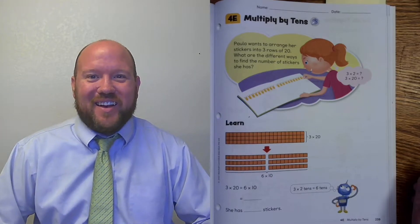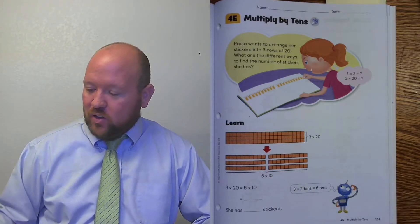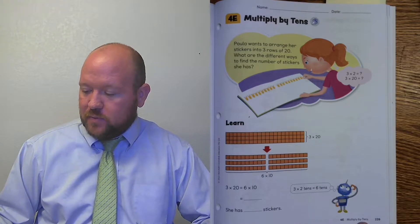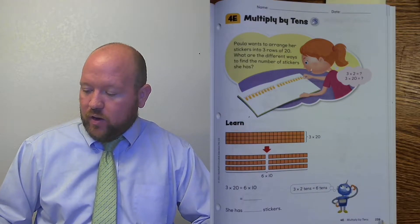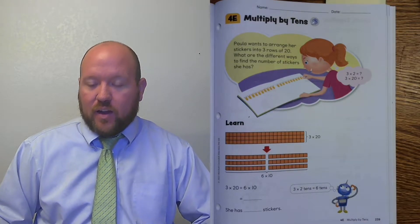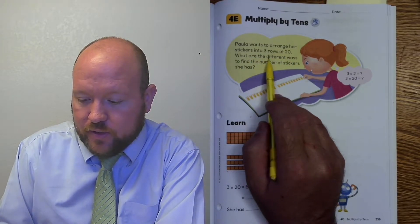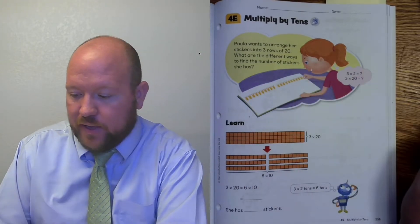Greetings and welcome to today's lesson. In today's lesson we are looking at multiplying by tens and we are on page 239. Let's begin by looking at our story problem. Paula wants to arrange her stickers into three rows of 20. What are the different ways to find the number of stickers she has?